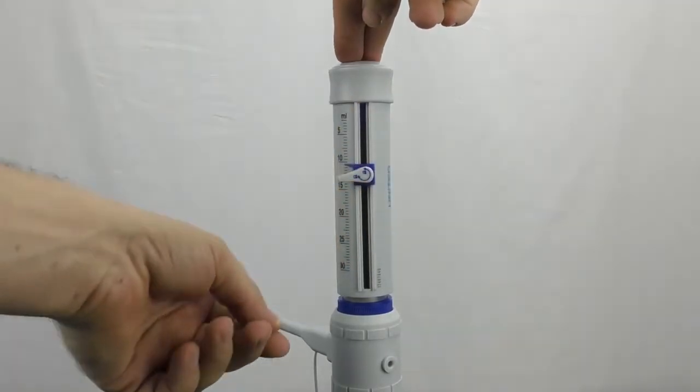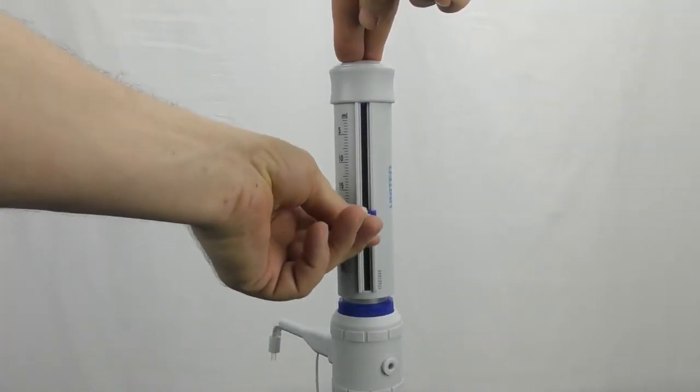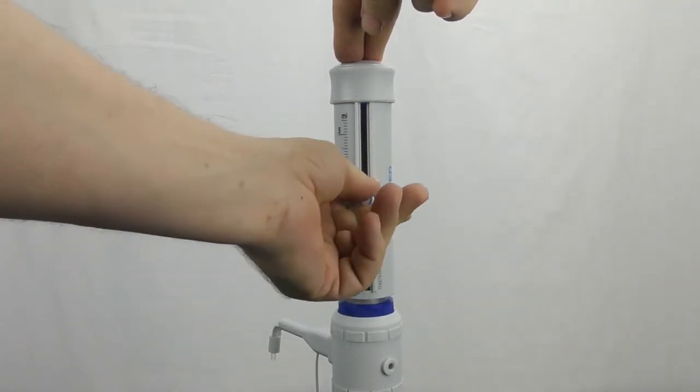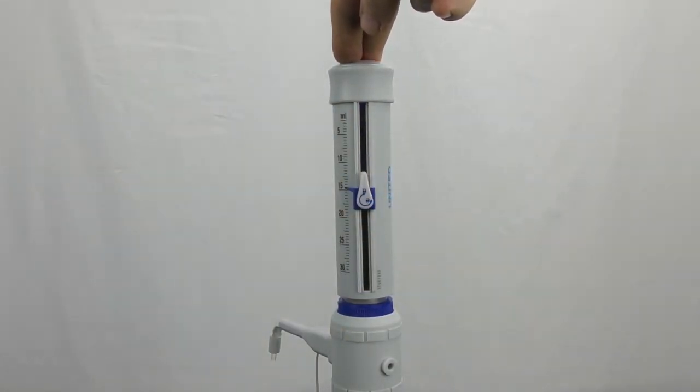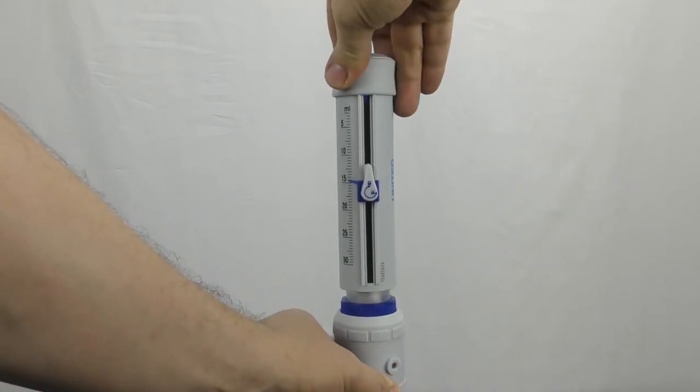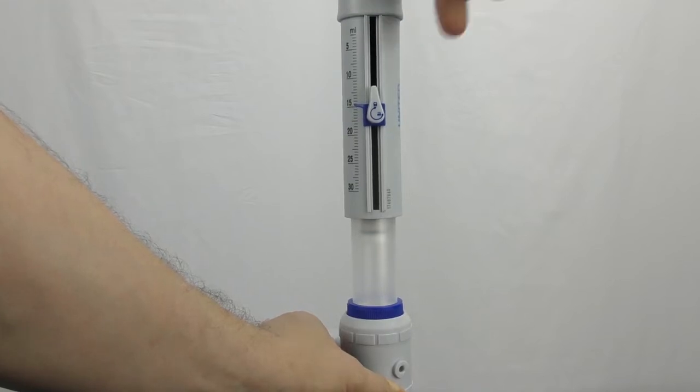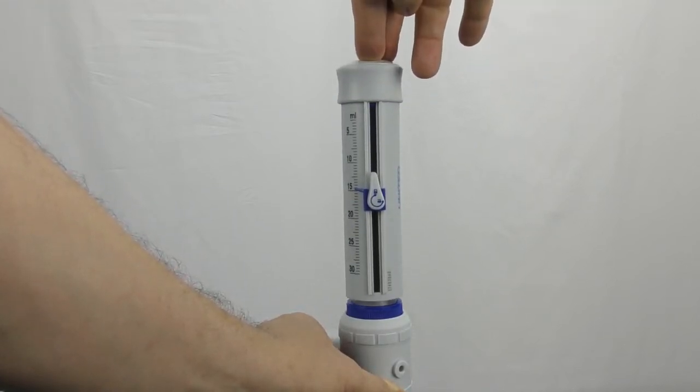You would turn this so that you can adjust the height or the volume that you want to dispense. Lock it in place. Then as you lift up it will draw up the solution to that specific volume and when you press down it dispenses it.